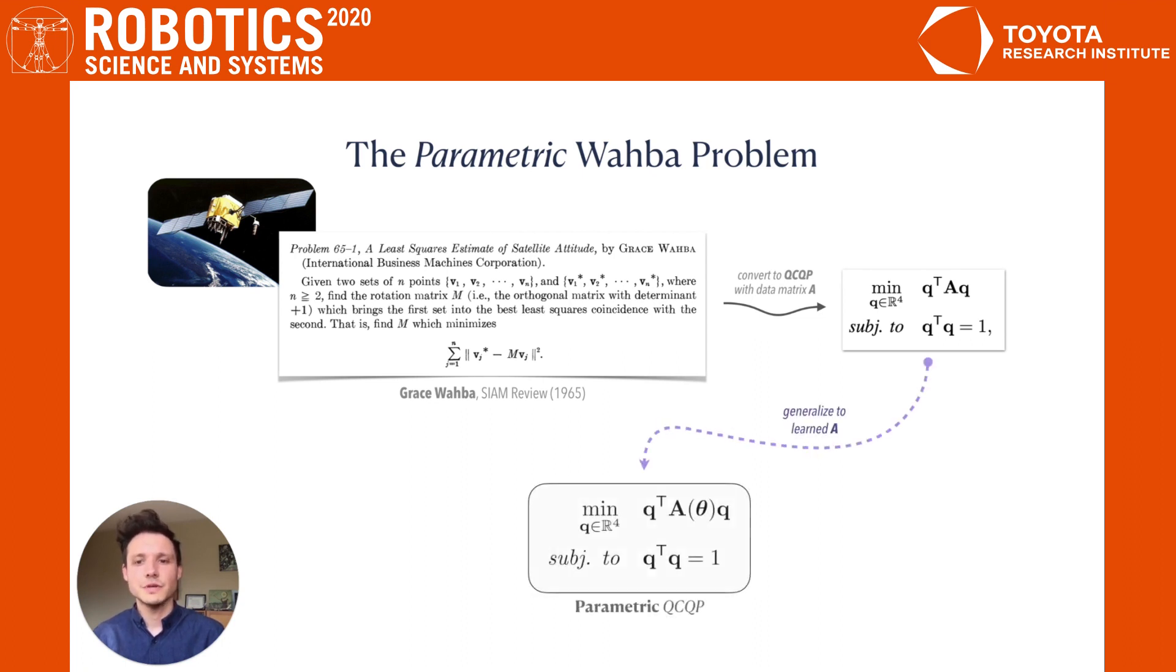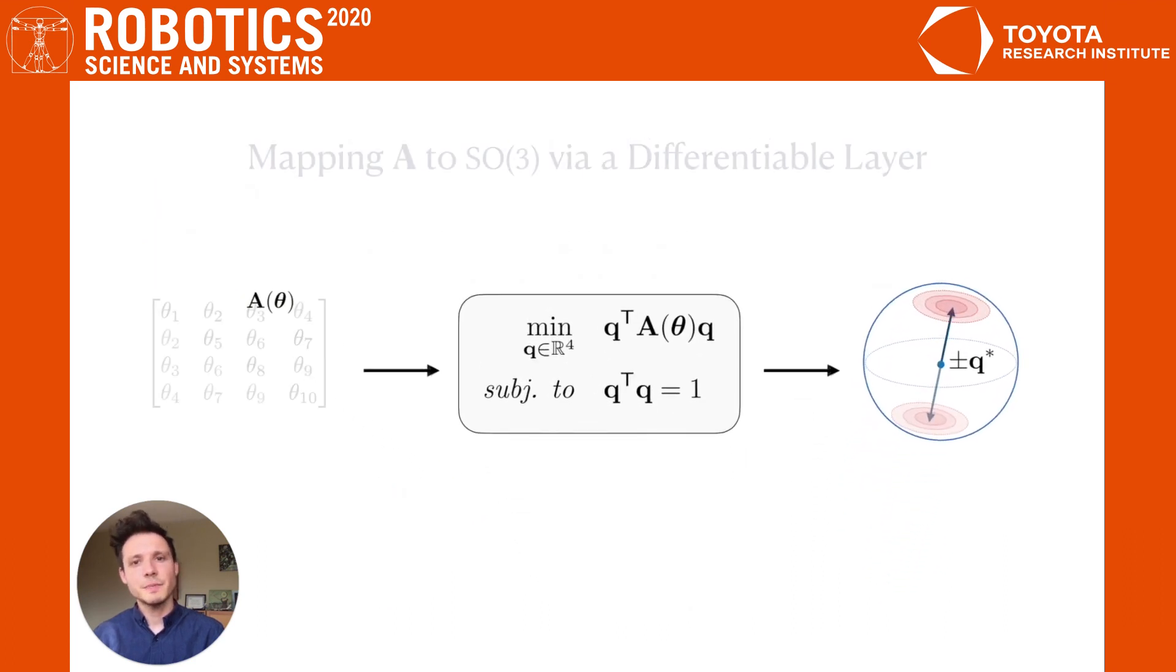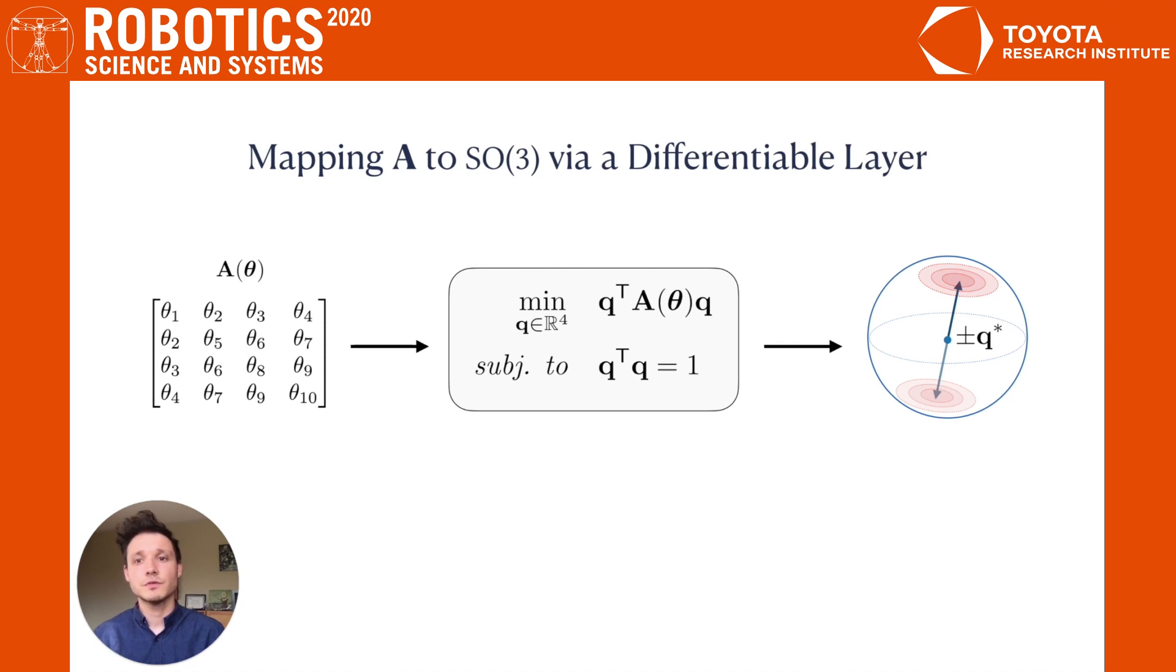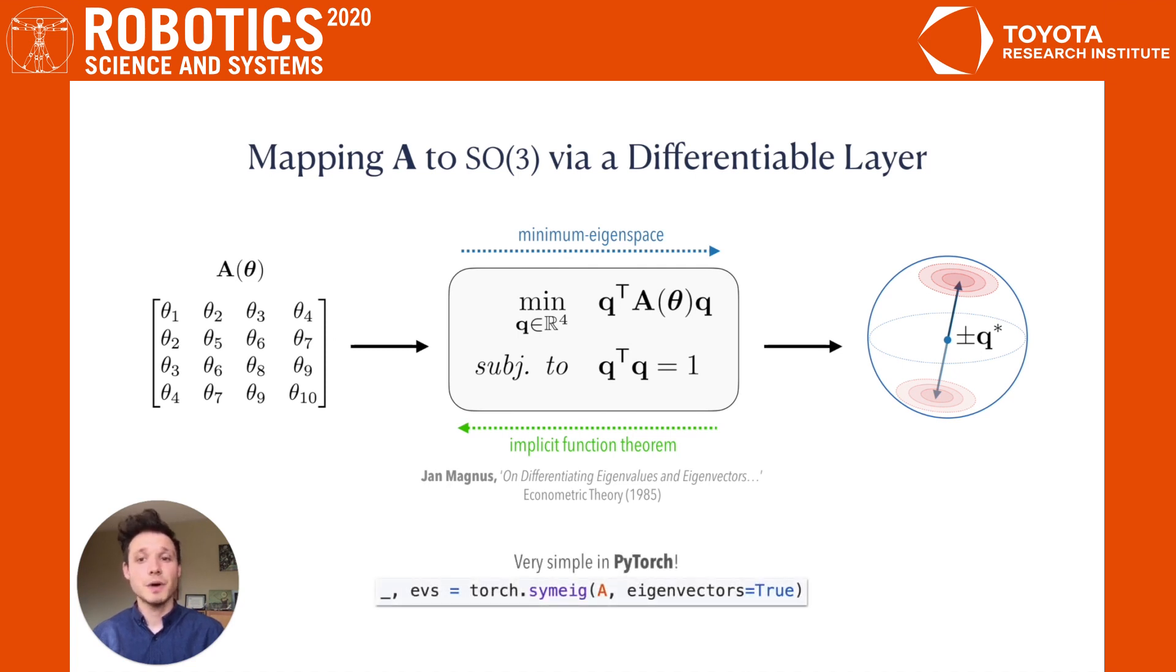We motivate our representation by generalizing the Wahba problem to a parametric form, where we use the solution of a QCQP to map a symmetric matrix to a unique SO3 element. Such a parametric QCQP admits a closed form solution via an eigendecomposition and an analytic gradient via application of the implicit function theorem. Many deep learning libraries such as PyTorch already include a differentiable eigendecomposition implemented in this manner.